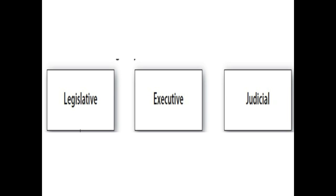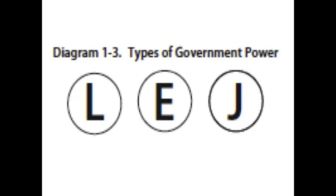The main graphic elements I use are very simple: three rectangles representing the three branches of government — Legislative, Executive, and Judicial — and three circles representing different types of power that a legislature may grant to an Executive Branch agency. The L in the circle represents quasi-legislative power, allowing agencies to make rules and regulations that operate like statutes. For example, the U.S. EPA makes rules limiting air and water pollution. The E represents executive power agencies have to enforce the law.